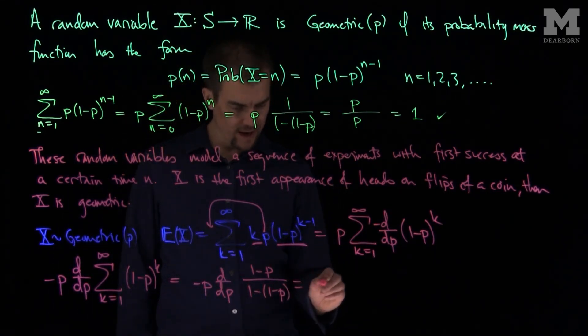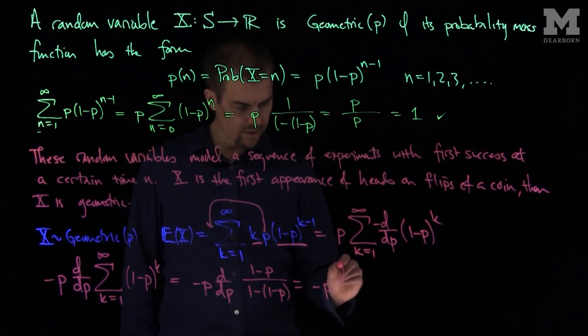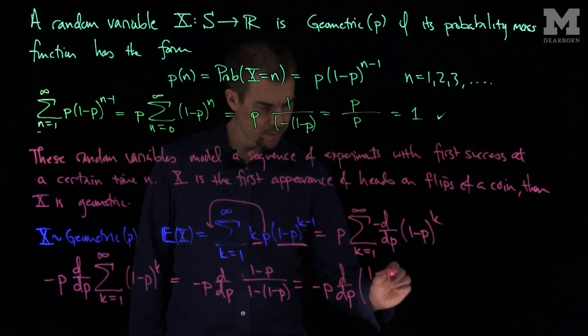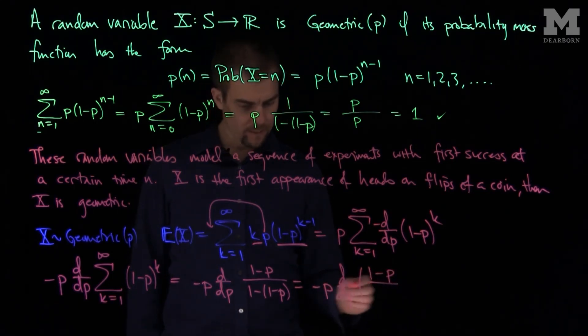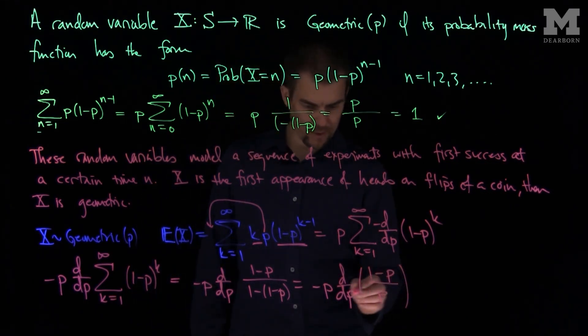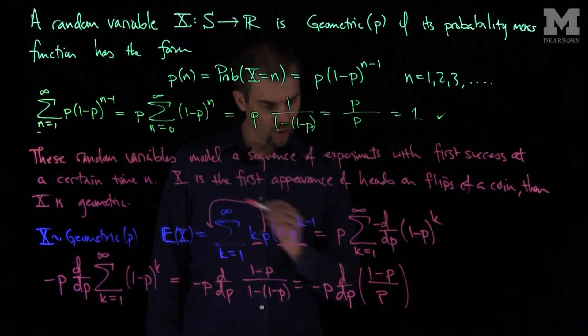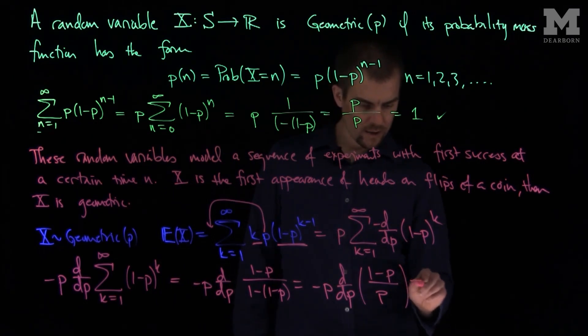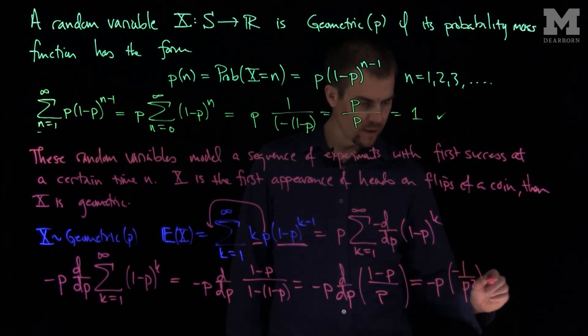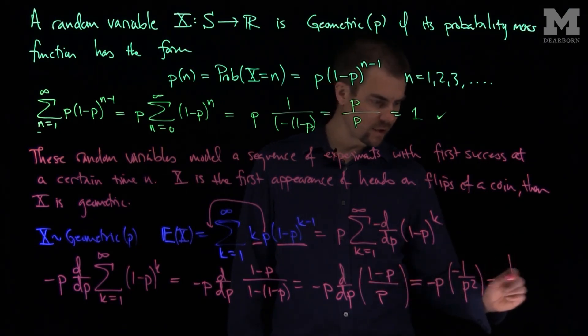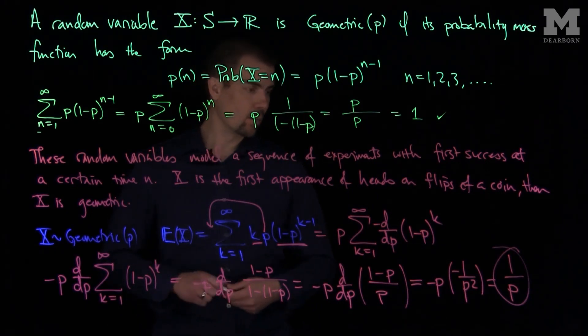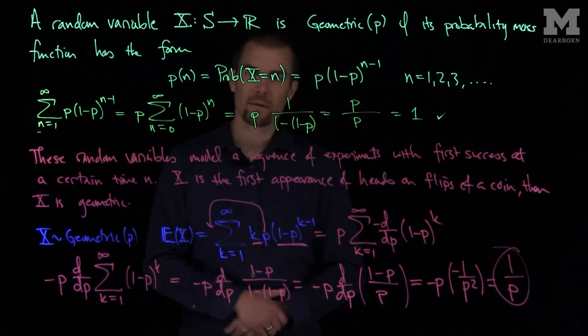And so what this simplifies to is negative p times the derivative with respect to p of (1-p) over p. The bottom is just going to be p. And so of course negative p over p is 1, that derivative is 0. The derivative of 1 over p is negative 1 over p squared. So this is negative p times negative 1 over p squared. And so the mean of this geometric random variable is just going to be 1 over p. Thank you very much.